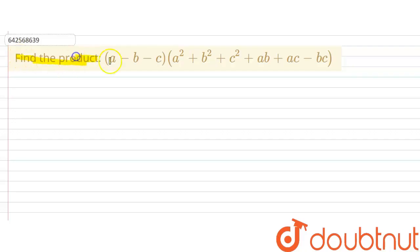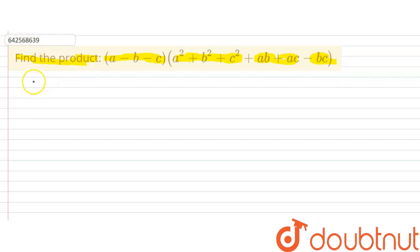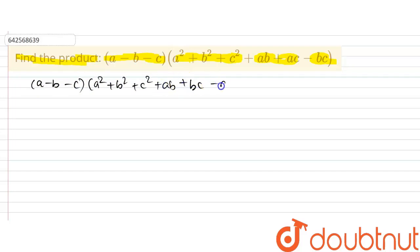Find the product of (a minus b minus c) multiplied with (a square plus b square plus c square plus ab plus ac minus bc). So the expression is: (a minus b minus c) multiplied with (a square plus b square plus c square plus ab plus ac minus bc).